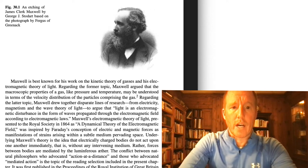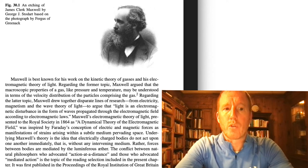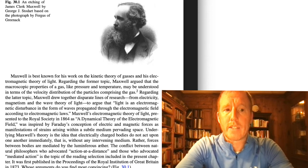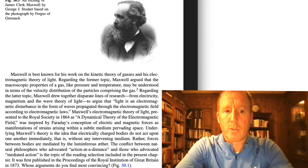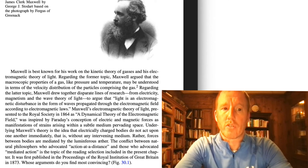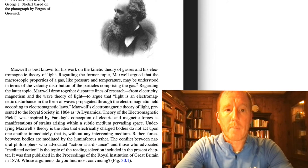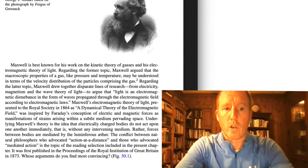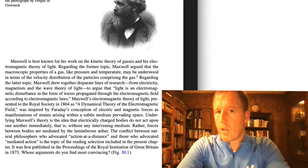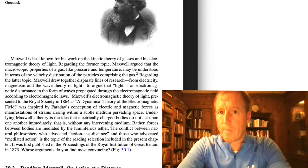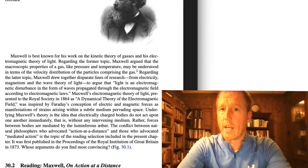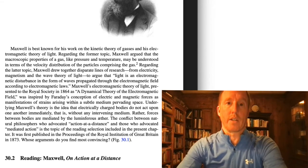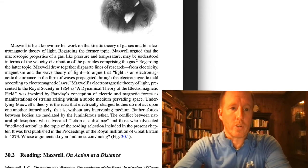Regarding the electromagnetic theory of light, Maxwell drew together disparate lines of research from electricity, magnetism, and the wave theory of light to argue that light is an electromagnetic disturbance in the form of waves propagating through the electromagnetic field according to electromagnetic laws. In this class, we've treated electricity separately, magnetism separately, and light separately, and now we are unifying them into an electromagnetic theory of light — this is essentially the work of James Clerk Maxwell.